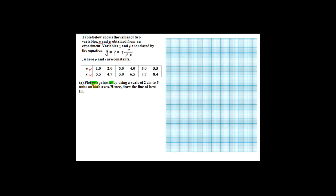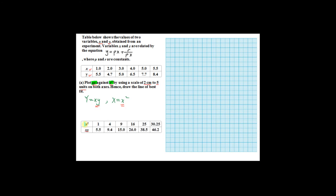Plot xy against x squared using a scale of 2 cm to 5 units on both axes, then draw the line of best fit. From part A, your big Y should be xy and your big X is x squared. You need to construct a table where the first row is x squared and the second row is xy.